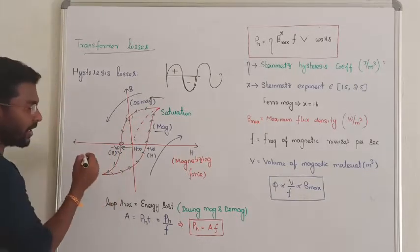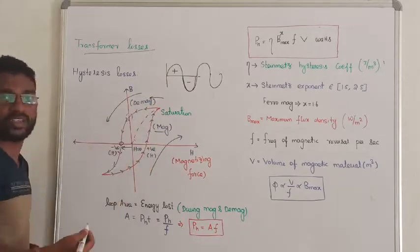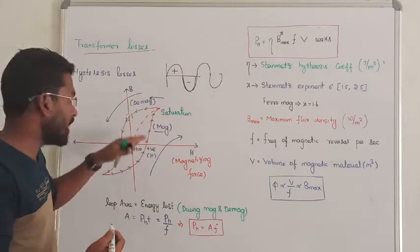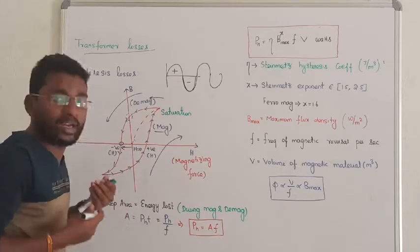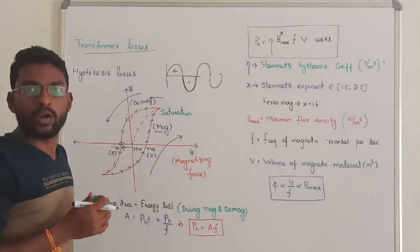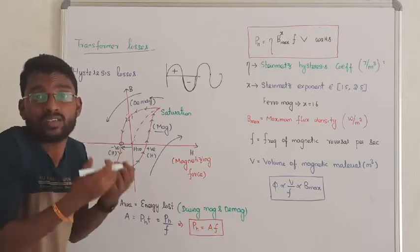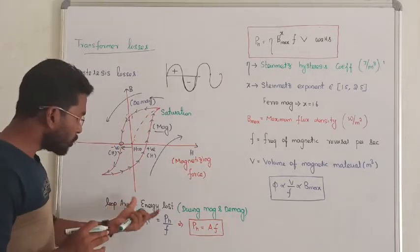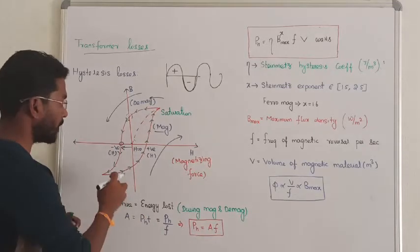During the negative cycle and positive cycle, the transformer goes through magnetization and demagnetization process and it will take some time. This time occurs over a cycle and the transformer will lose some energy.